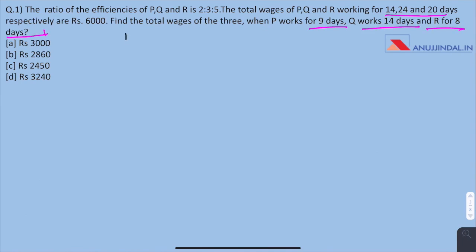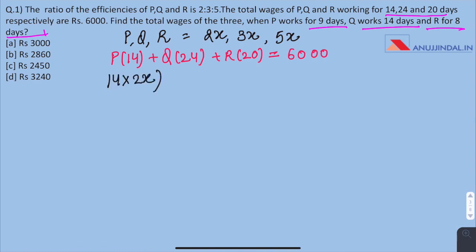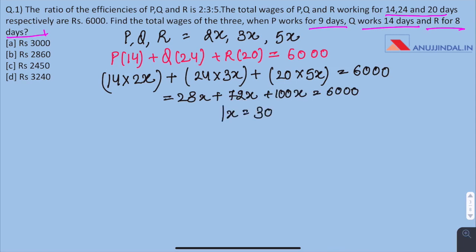Let the efficiencies of P, Q and R be 2X, 3X and 5X respectively. As per the question, P works for 14 days, Q works for 24 days and R works for 20 days. And the total of their wages is 6,000. Putting the value of their efficiencies in the equation, we get 14 into 2X work done by P in 14 days, 24 into 3X which is work done by Q in 24 days and 20 into 5X which is work done by R in 20 days goes to 6,000. On further solving, we get the value of X which comes out to be 30.